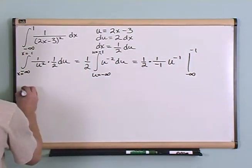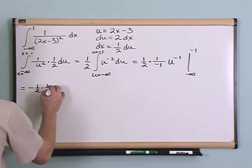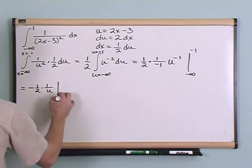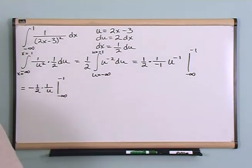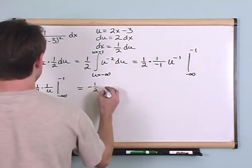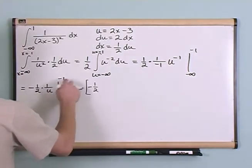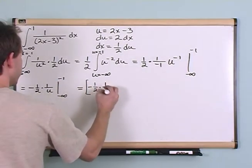And so to simplify this you'll have negative one-half times one over u evaluated negative infinity to negative one. And so then in the end you'll have negative one-half, okay, and do it like this. Negative one-half, and you plug in the top limit times one over negative one.